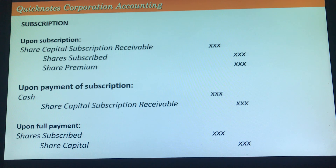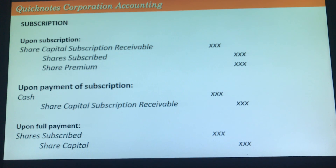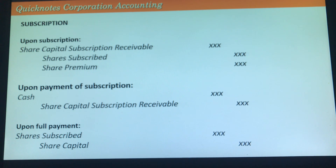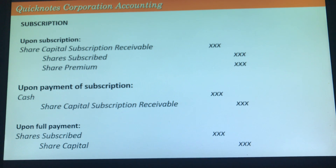Only shares with full payment for the subscription will be issued stock certificates. For subscription defaults, there are two options: the shares may be issued to the highest bidder — who pays the balance — or the shares may be issued in the name of the corporation, in which case they become treasury shares.